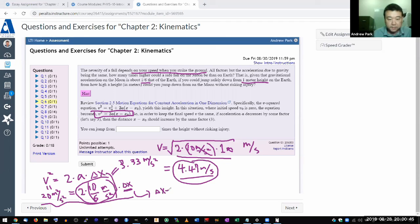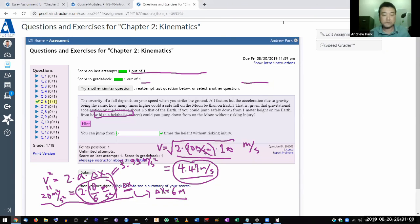So that's 6 times 1 meter height, so that should be the answer. Let's see. You can jump from 6 times the height without risking injury. And the system says, yes.